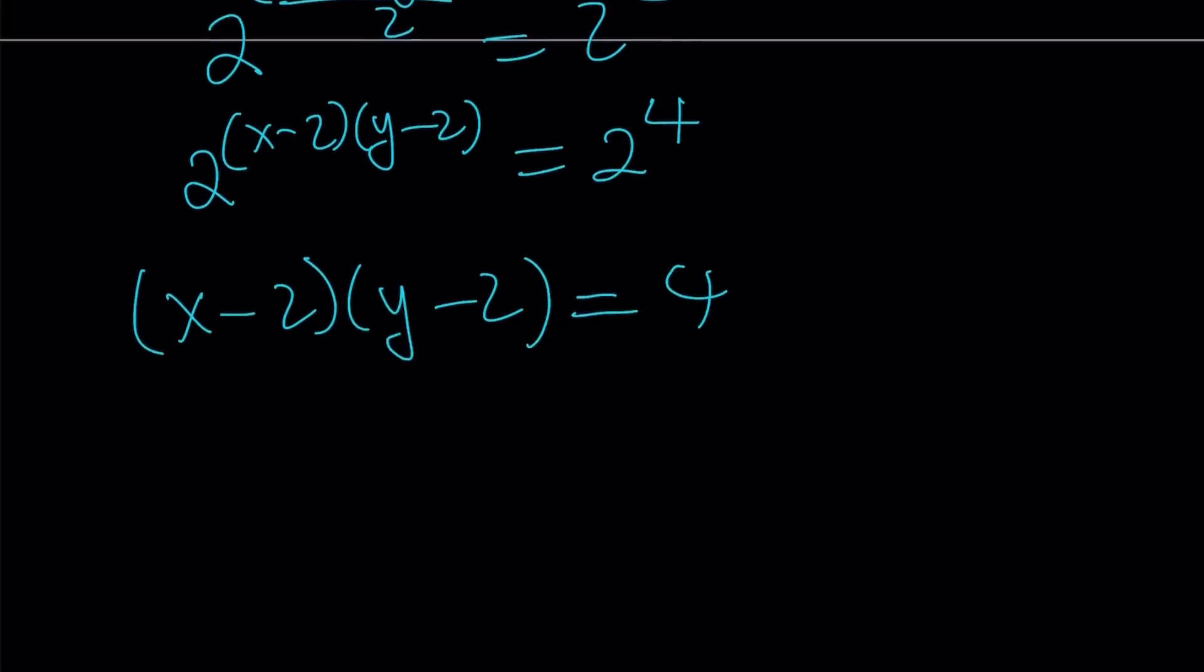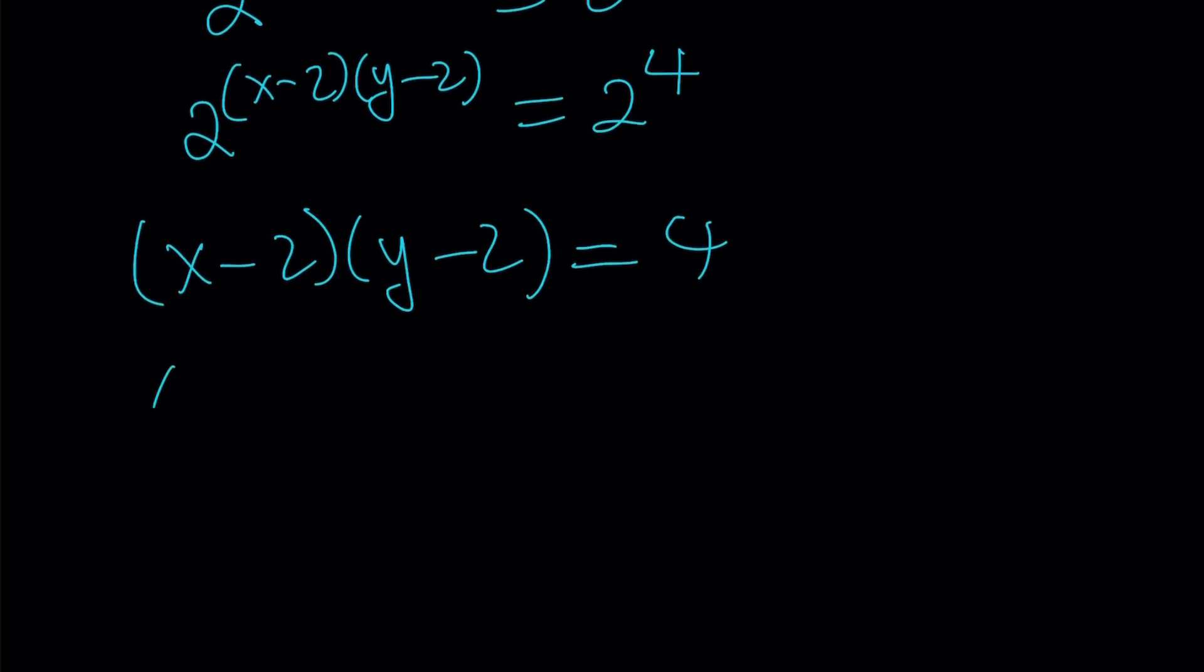And if you distribute this, you're going to get something amazing. Let's go ahead and do it. This should remind you, xy minus 2x minus 2y plus 4 equals 4. 4 cancels out. We end up with a 0.